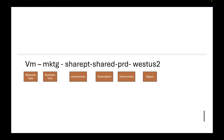Here's another naming convention example: resource type, business unit 'marketing', service name 'sharepoint', subscription 'shared services', environment 'prod', and region 'West US'.